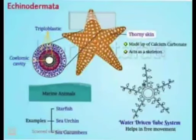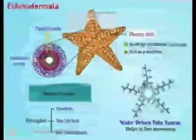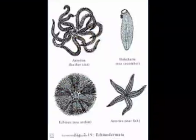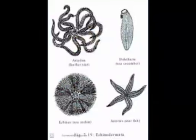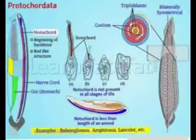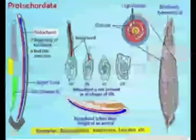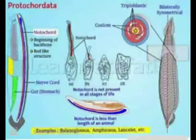The common examples of Echinodermata include the starfish and sea urchin. As you can see in this figure, these are the common examples of phylum Echinodermata.